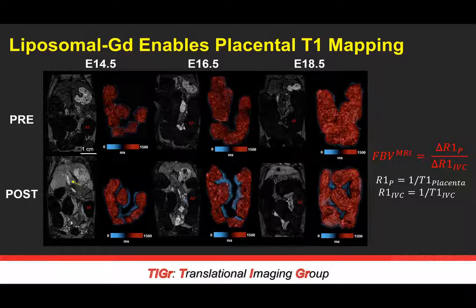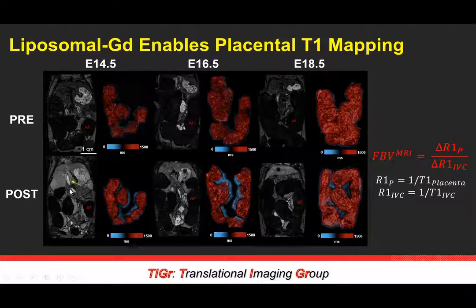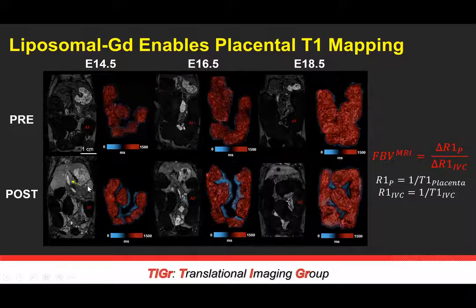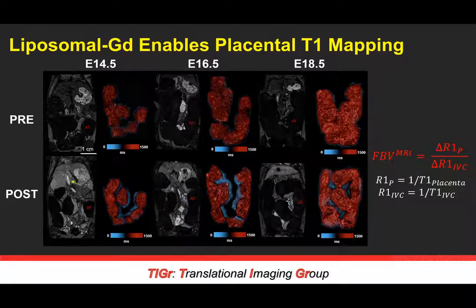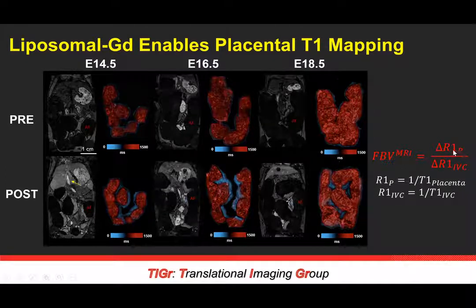From this, how do we calculate fractional blood volume? We set a reference point with a fully vascularized compartment — the inferior vena cava, or IVC, denoted by the yellow arrow — which we assume to be fully perfused, or 100% blood volume. We then relate the change in T1 relaxation time in the IVC to the target organ, the placenta, and the ratio of change gives us the fractional blood volume.